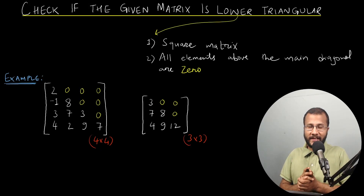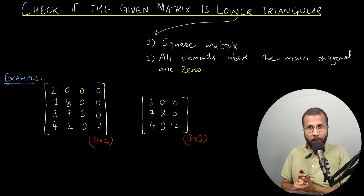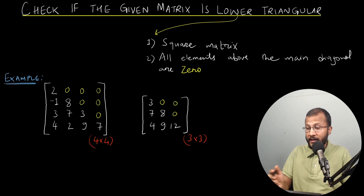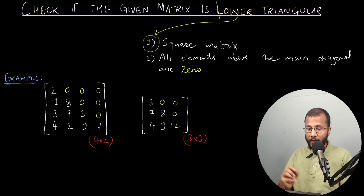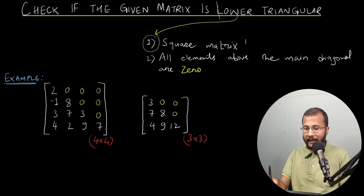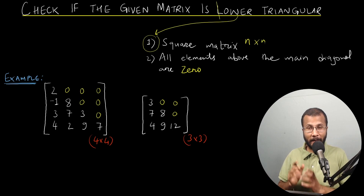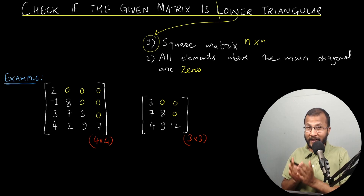In this lecture we are going to learn how to check if a given square matrix is lower triangular or not. So first of all let's try to understand what is a lower triangular matrix. For a matrix to be a lower triangular matrix it has to have two things. First, this matrix must be a square matrix — a matrix wherein the number of rows equals the number of columns. If the number of rows is n, the number of columns should also be n, making it an n×n matrix.